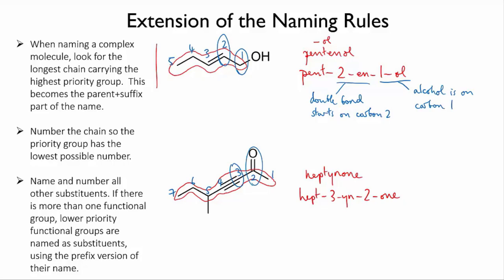And lastly, there's a methyl group on carbon number five as a substituent, so we end up with 5-methyl-hept-3-yne-2-one.